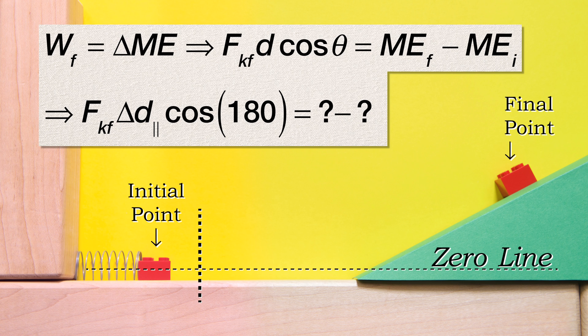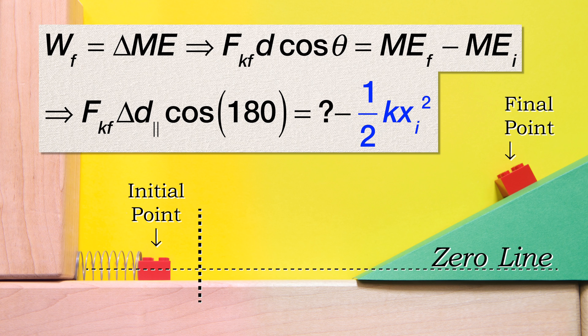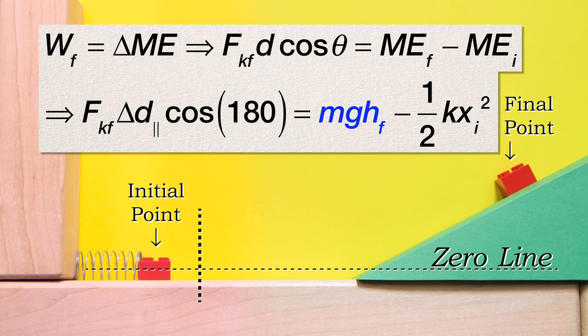The initial velocity of the block is zero, so there is no initial kinetic energy. The initial height of the block is zero, so there is no initial gravitational potential energy. There is an initial compression of the spring, so there is elastic potential energy initial. The final height of the block is not zero, so there is gravitational potential energy final. The final velocity of the block is zero, so there is no kinetic energy final. The block is not compressing the spring at the end, so there is no elastic potential energy final.